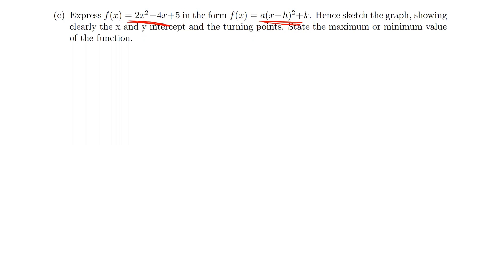When you manage to express it in that format, you can find the x and y intercepts. After finding those, you find the turning point, then state whether it has a maximum or minimum value and find that value. From there you can sketch. So the first step is to express the equation in vertex form. There's a simple method, but this question asks us to use completing the square.